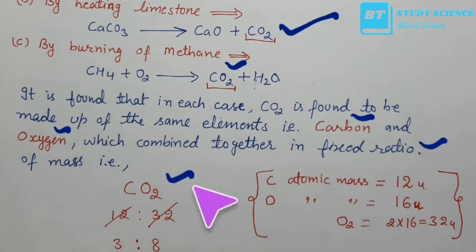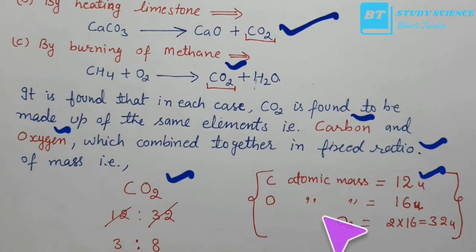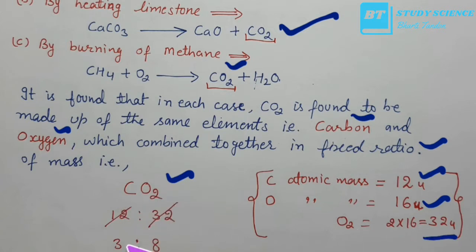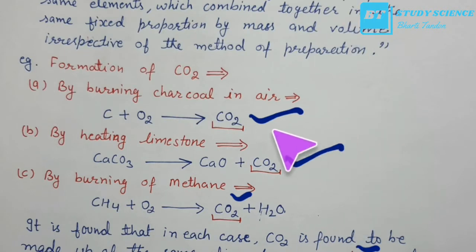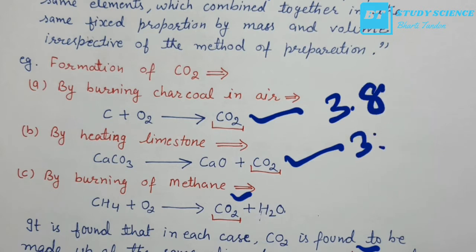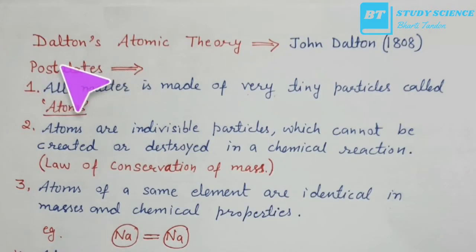This fixed ratio of 3:8 (carbon to oxygen) in CO₂ is constant regardless of the source, which demonstrates the law of constant proportion. Next topic is Dalton's Atomic Theory, given by John Dalton in 1808.